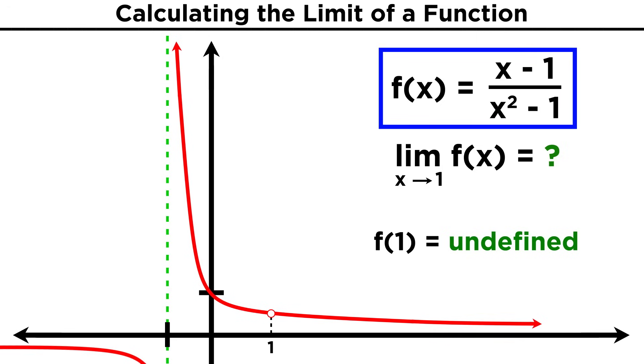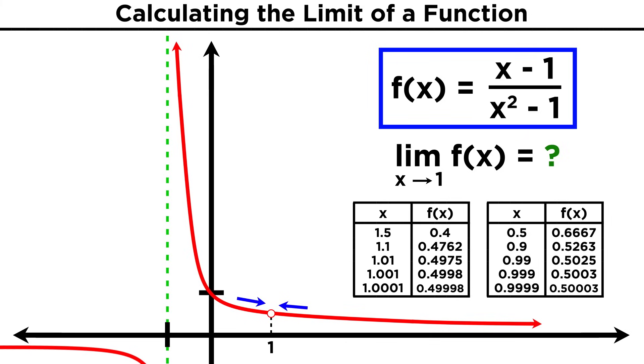This is an example where limits become useful, because we want to know what the function does all the way up until we get to one from either side, and we can't just plug the value directly into the function like we could with the x squared function. Instead, we can plug in values that get closer and closer to one, both larger and smaller, and we can clearly see that the function approaches zero point five, or one half. So that's the limit of this function as x approaches one.